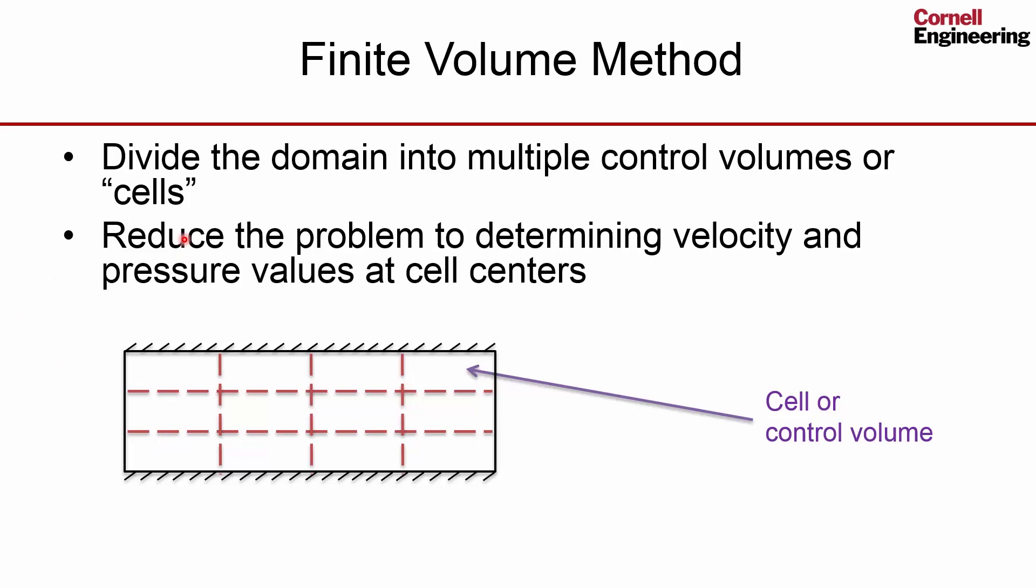The next thing we do is reduce the problem to determining velocity and pressure values at cell centers. So I've marked out the cell centers here. I have 12 cells, so I have 12 cell centers. And at each cell center, I need to determine velocity, which has two components, and pressure. So I have three unknowns at each cell center.